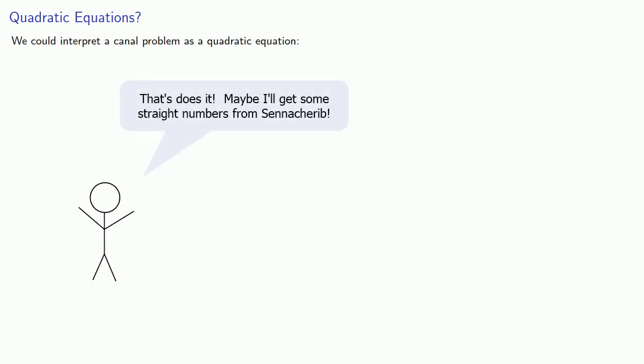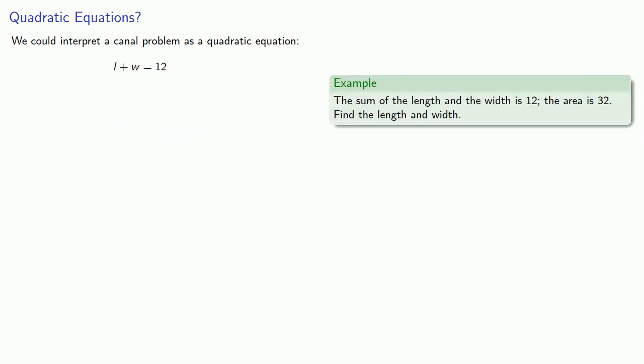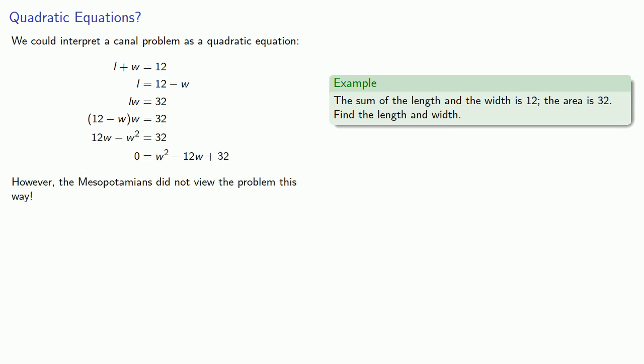The canal problems give rise to an important problem in interpretation. We could interpret a canal problem as a quadratic equation — we have the sum of the length and width and the area, solve for length, substitute, expand, and that gives us a quadratic equation. However, it's important to keep in mind that the Mesopotamians did not view the problem this way. They did not see this as a quadratic equation, but saw it as a canal problem.